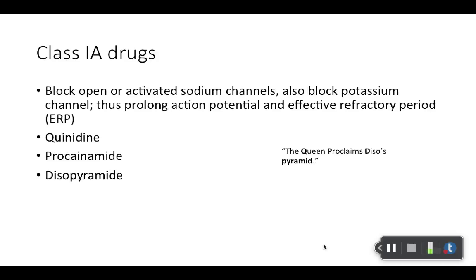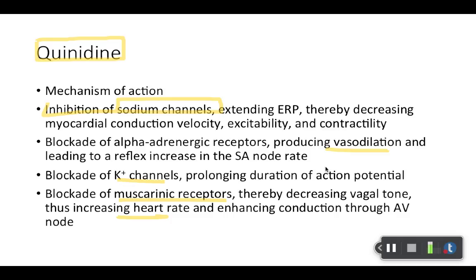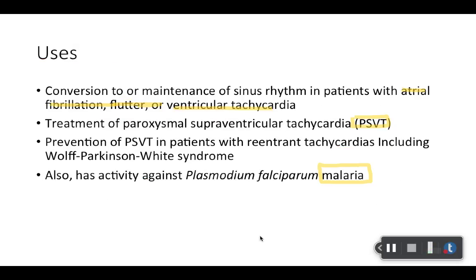First we have class 1A. These mainly block sodium channels, but they also have a little effect on the potassium channel — that's what makes them a little different. So globally you can think of them as affecting sodium, but remember that 1A also affects potassium. What does that do? It basically prolongs the action potential, making it more effective. Here's a mnemonic to help you memorize these: 'the queen proclaims desos pyramid.' These are always silly, but if they help, they help. For quinidine, the mechanism of action take-home point is sodium channel blocker — in addition to being antiarrhythmic, they also cause vasodilation. Note that class 1A also blocks potassium channels, and they also block muscarinic receptors. So for quinidine: sodium, potassium, and muscarinic.